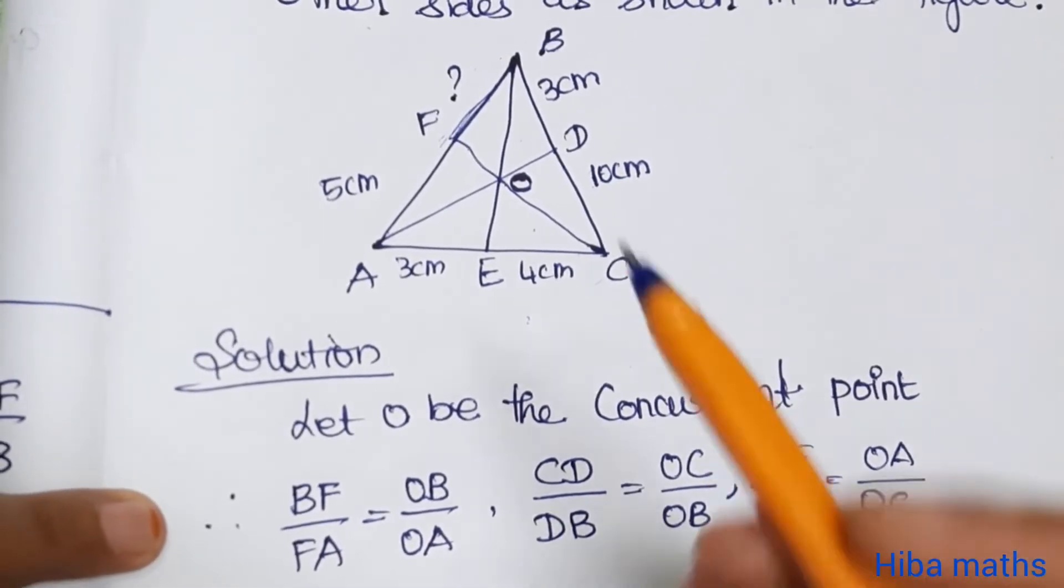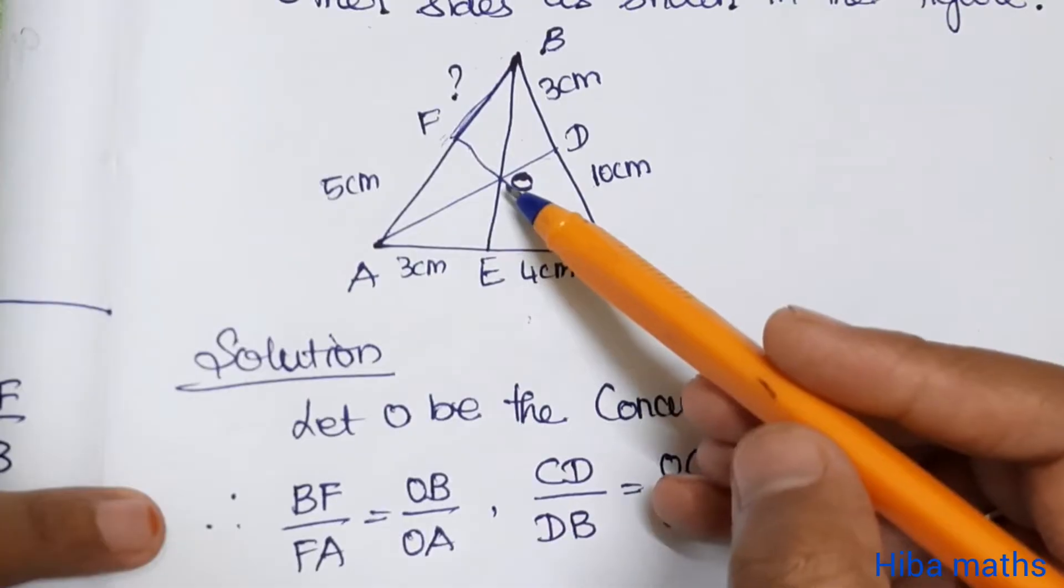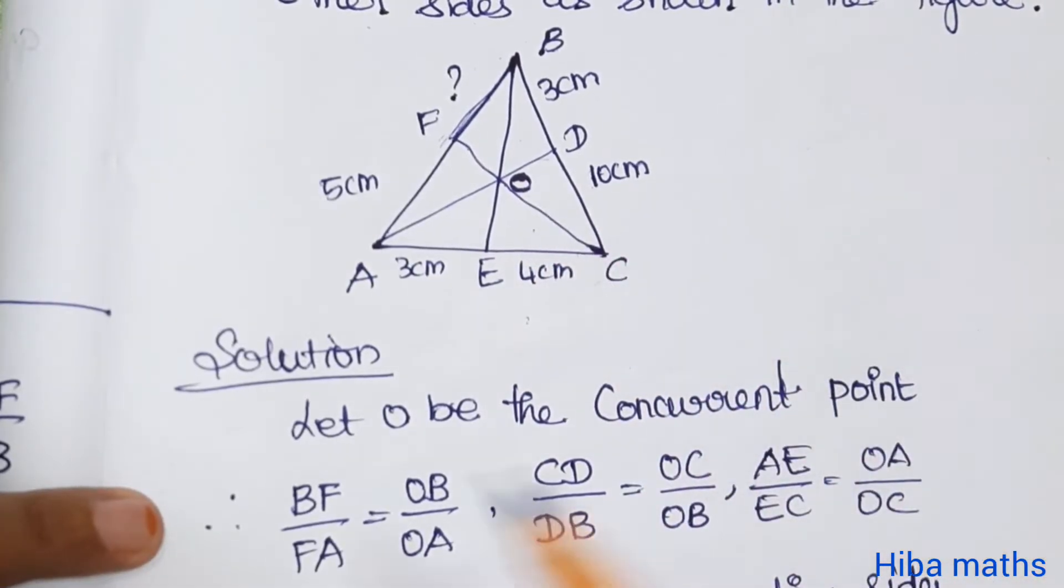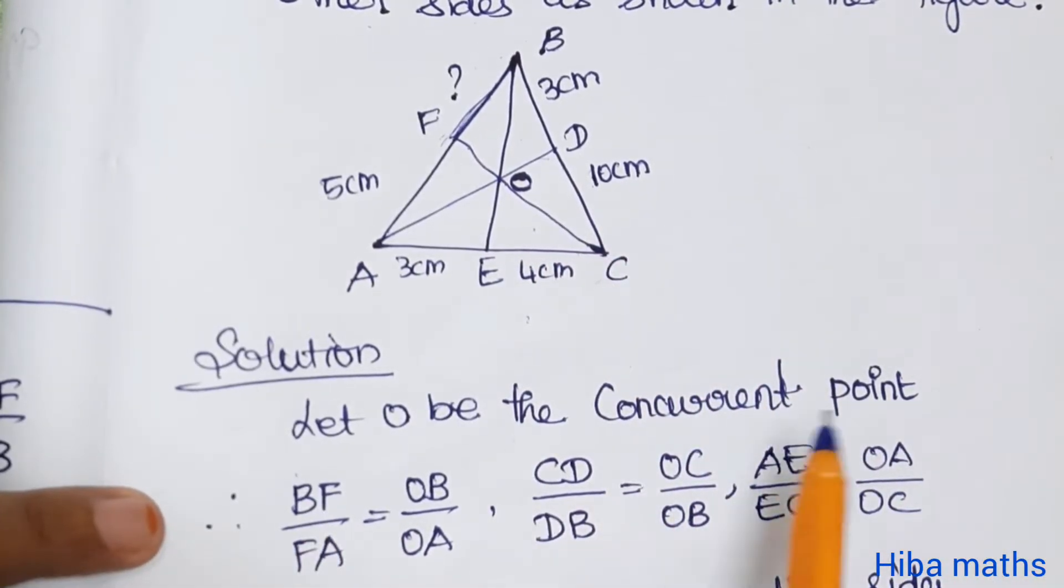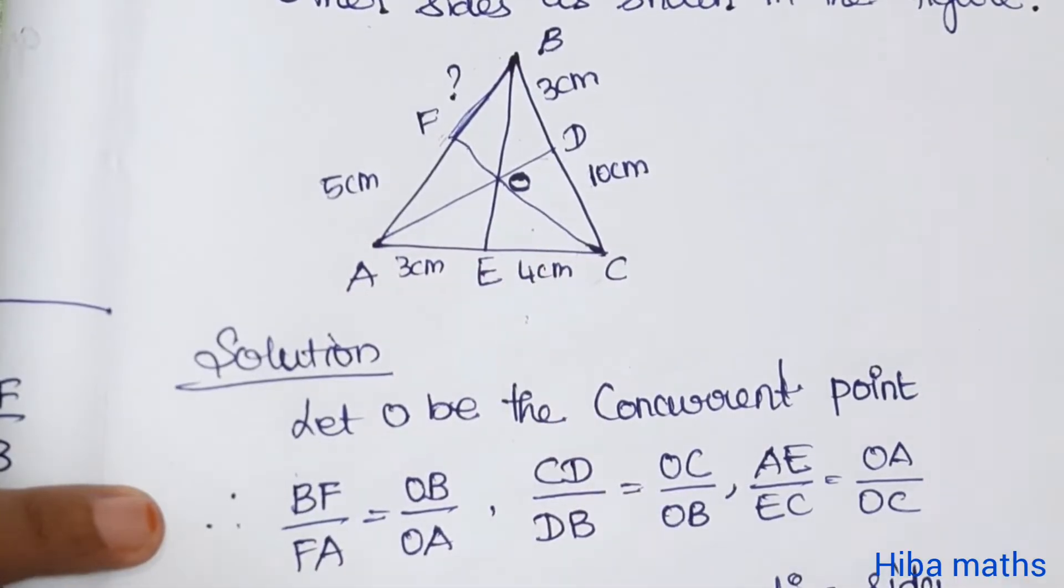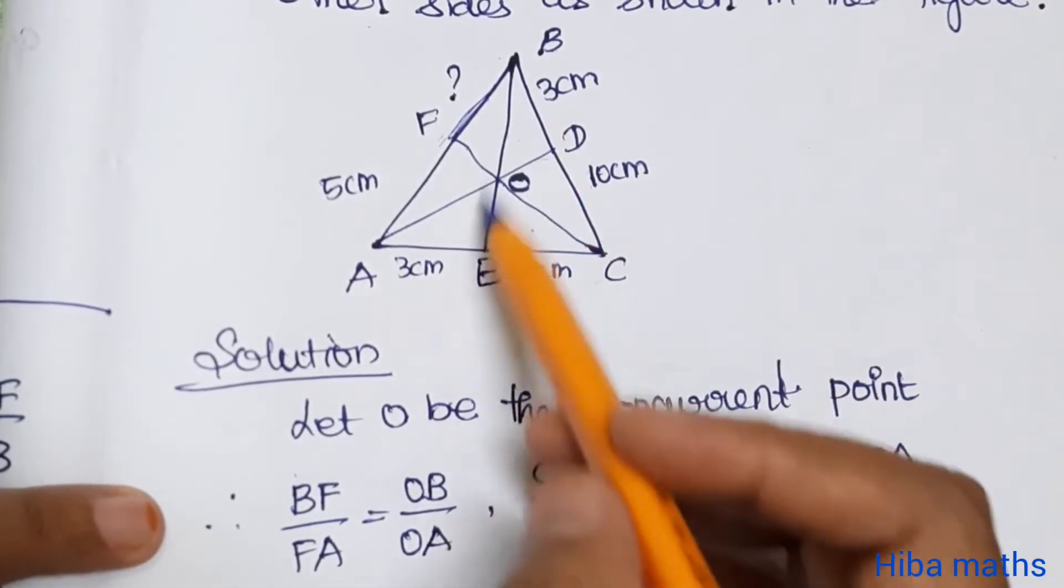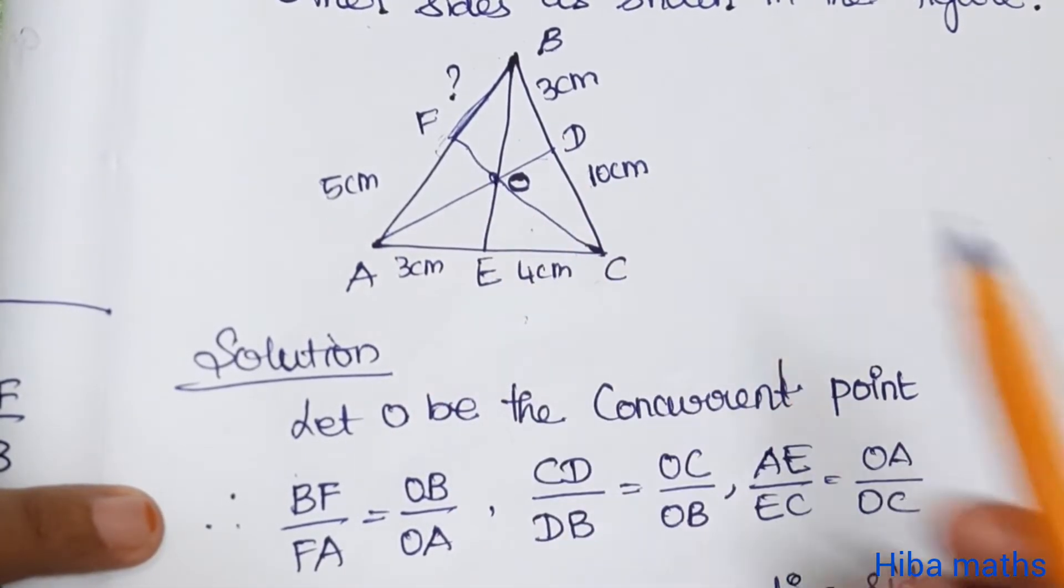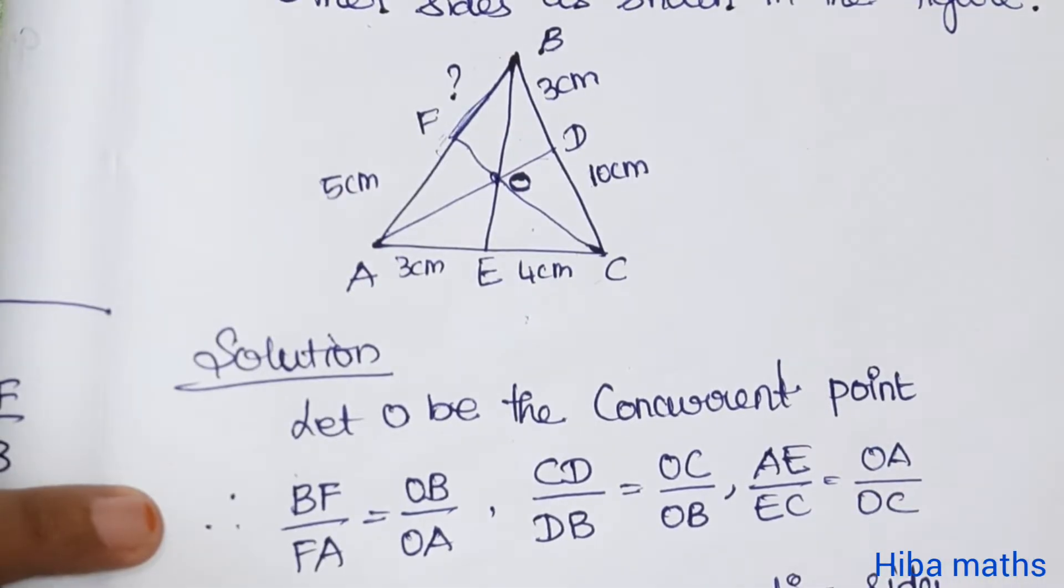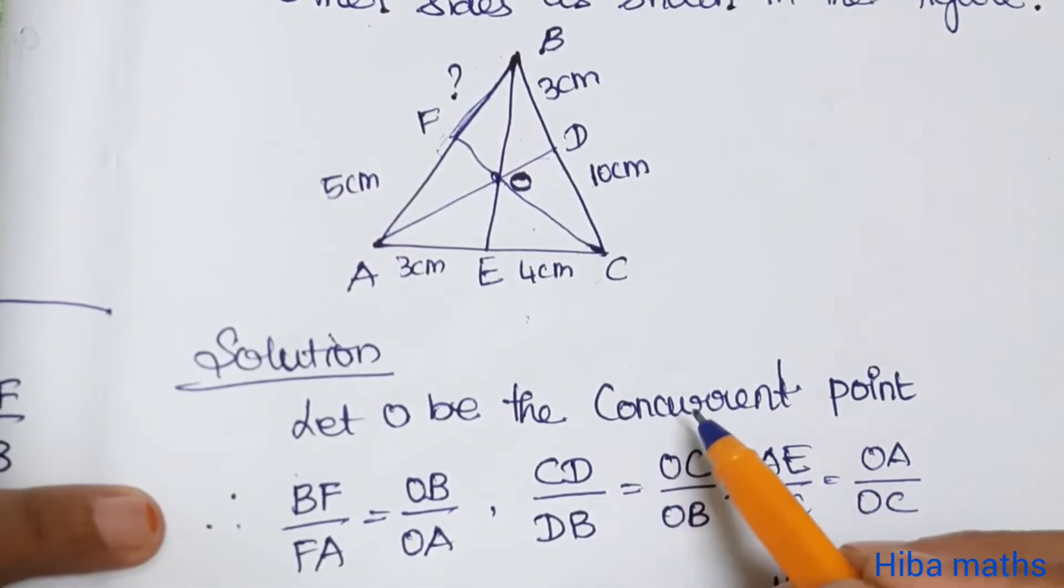If you want to join this whole line, let O be the concurrent point. That is the concurrent point.